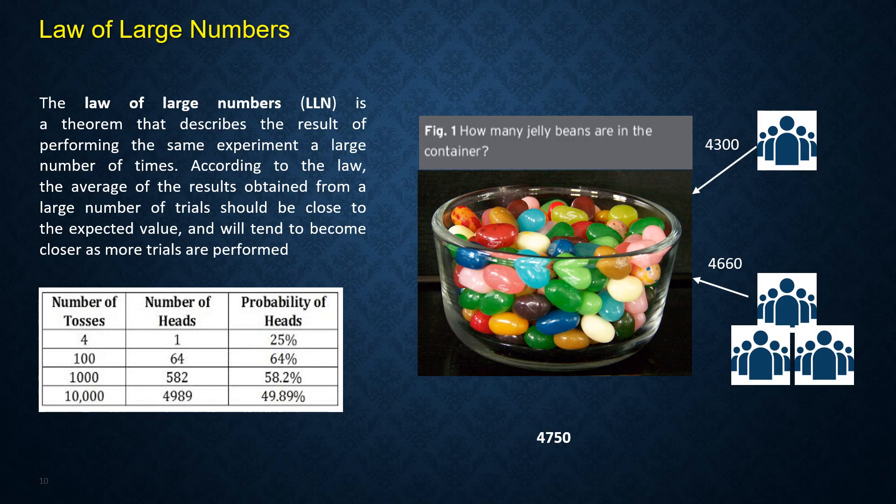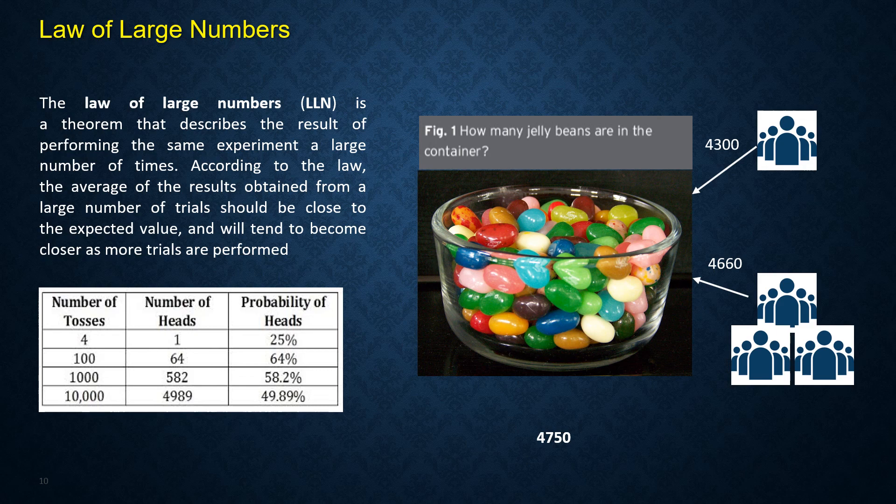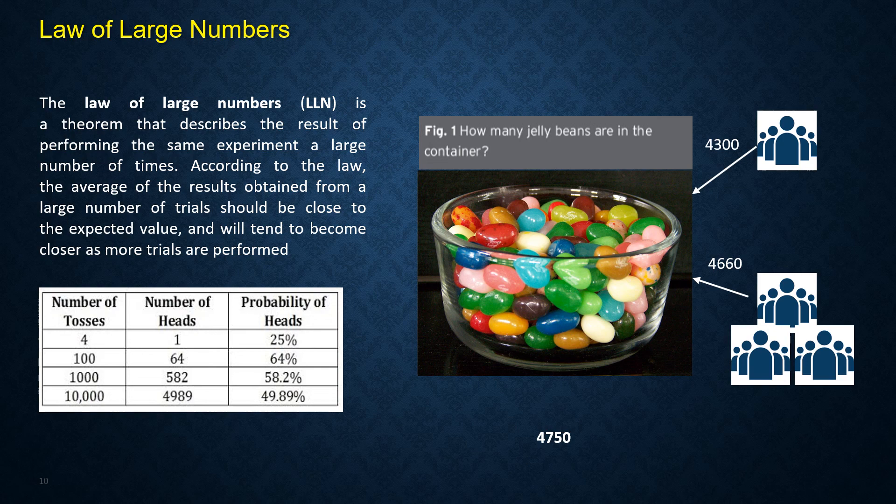The law of large numbers is a theorem that describes the result of performing the same experiment a large number of times. According to the law, the average of the results obtained from a large number of trials should be close to the expected value and will tend to become closer as more and more trials are performed.